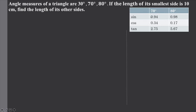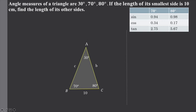We will unpack the lesson and discuss the first problem. This is triangle ABC. We will consider angle A as 30 degrees, angle B as 70 degrees, and angle C as 80 degrees. The smallest side is BC.